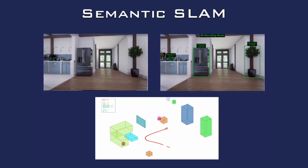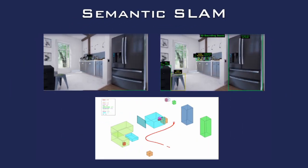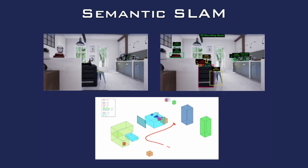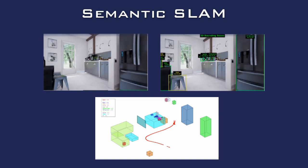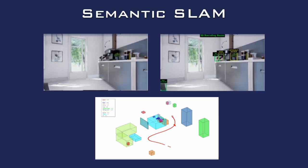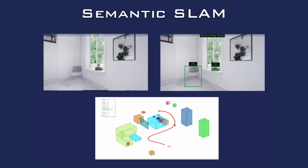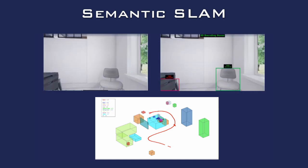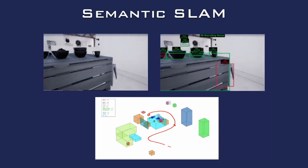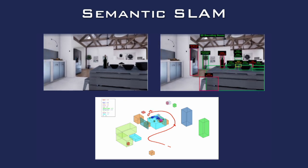In our Semantic SLAM Challenge, a robotic agent must explore a given environment and report the 3D location of all objects of interest found within, such as chairs, televisions, plants, etc. After exploration, the system must produce a semantic mapping of the objects found, reporting the location, extent and class of each object, such as is shown at the bottom of your screen. Performance is ranked based on how well the produced map matches the ground truth semantic map, both spatially and semantically.